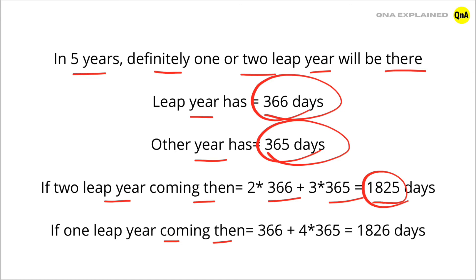If 1 leap year is coming, then 366 plus 4 into 365 equals 1826 days.